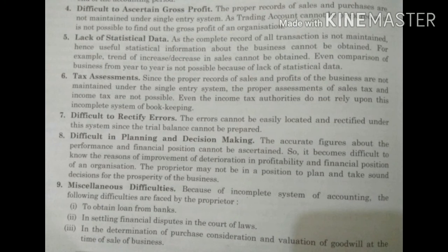Fifth limitation is lack of statistical data: इसमें सभी accounts की information record नहीं करते, nominal account को ignore करते हैं, जिसकी वजह से company को अपने trends के बारे में नहीं पता लग सकता — कितना increase या decrease आ रहा है, या पिछले year से अच्छा या बुरा perform किया। Sixth limitation is tax assessment: sales और profit का proper record नहीं होने पर sales tax और income tax calculate करना possible नहीं है। Income tax department single entry accounts को accept नहीं करता। Seventh limitation is difficulty to rectify errors: गलतियाँ और fraud होने के chances ज़ादा हैं और गलतियाँ ढूंढना बहुत मुश्किल है क्योंकि trial balance maintain नहीं किया जाता।